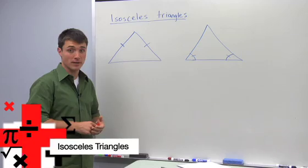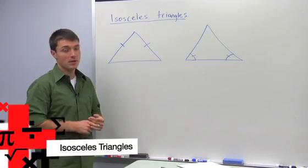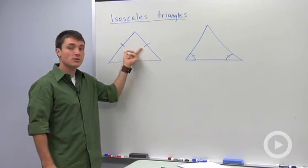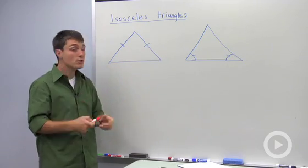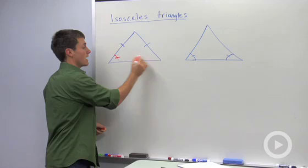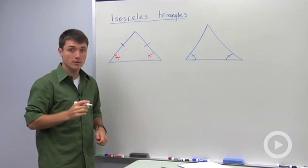When we're talking about isosceles triangles, there's two key things. The first is isosceles triangles mean we have two sides that are congruent. If we know that, we can assume that the base angles are congruent. But wait a minute, I just used a couple new words.